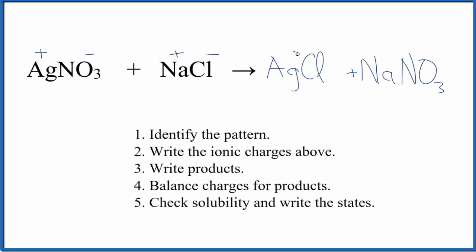At this point we need to balance the charges here for the products. So we said silver is positive and the chloride ion, that's negative. So these add up to zero. That's okay. Sodium ion is positive and the whole nitrate is negative. So those charges, they're balanced as well.